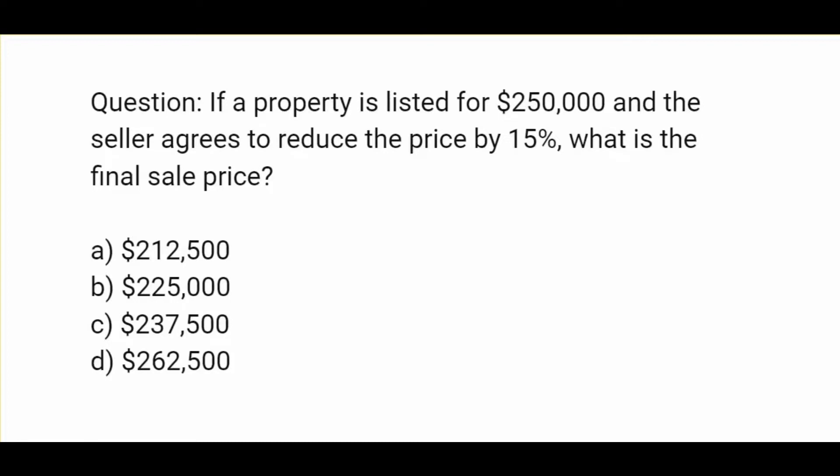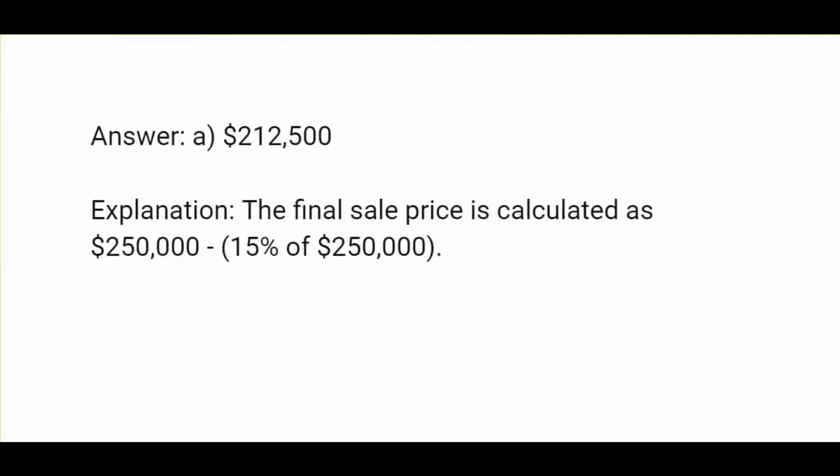If a property is listed for $250,000 and the seller agrees to reduce the price by 15%, what is the final sale price? The answer is $212,500. The final sale price is calculated as $250,000 minus 15% of $250,000.